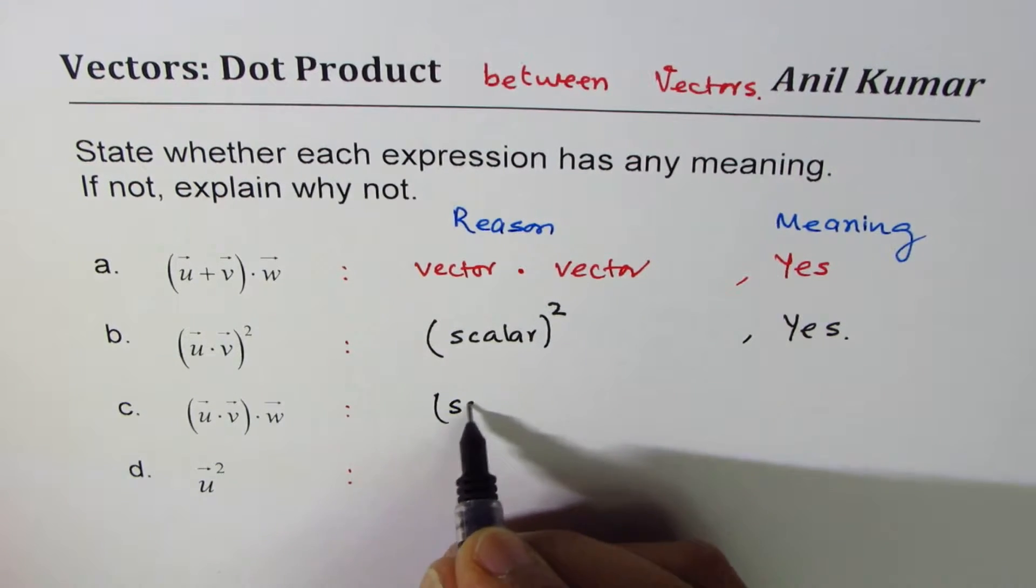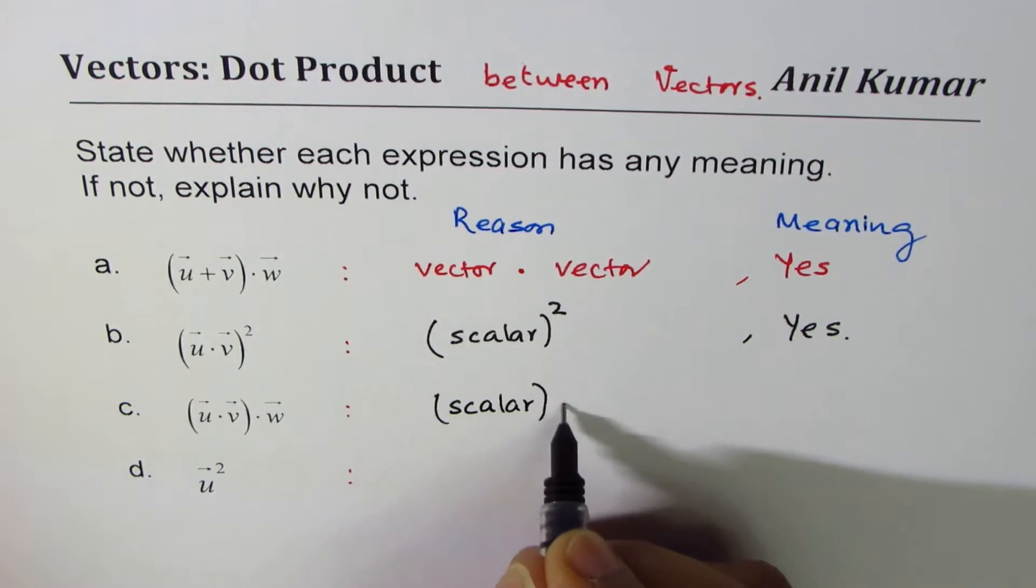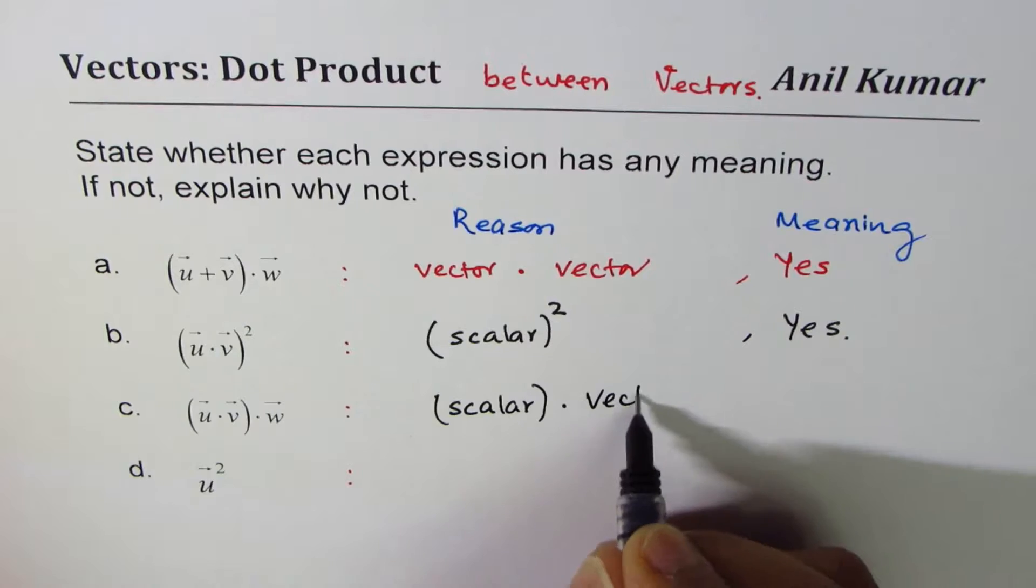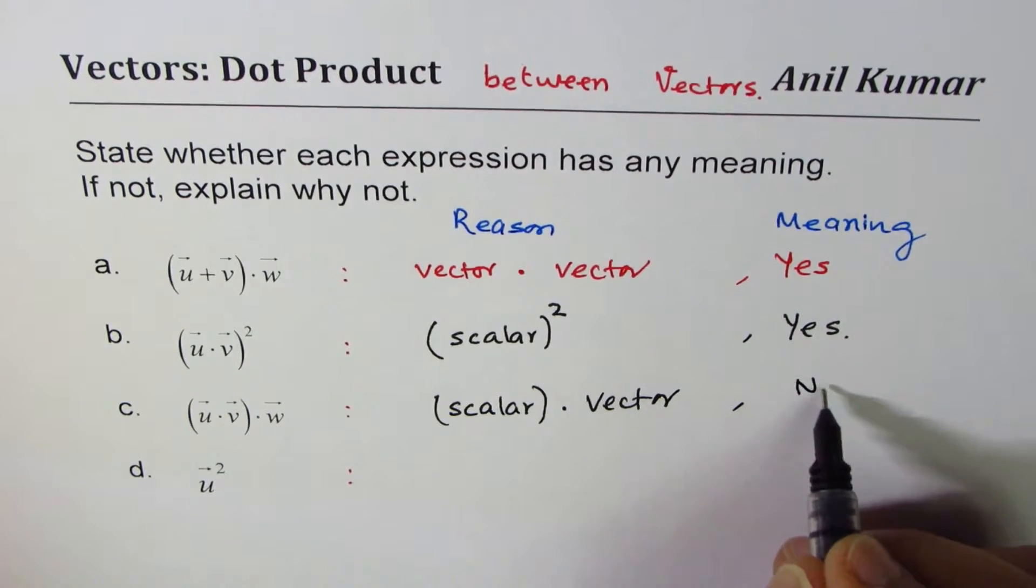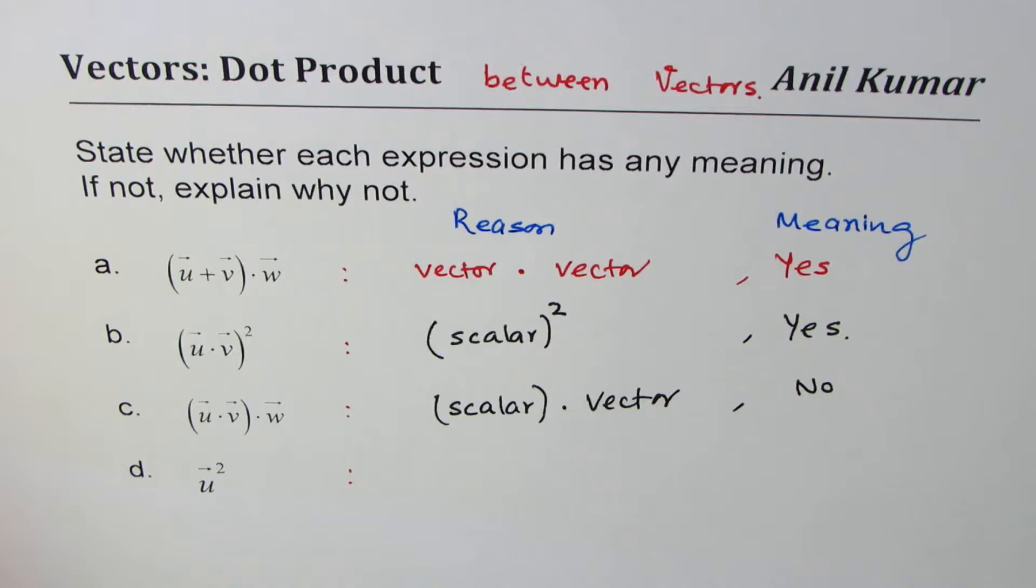Dot product always is a scalar. Now in this case, when you do the dot product, you get scalar dot vector. Do you see that? Now scalar dot vector does not have any meaning, so it is not valid.